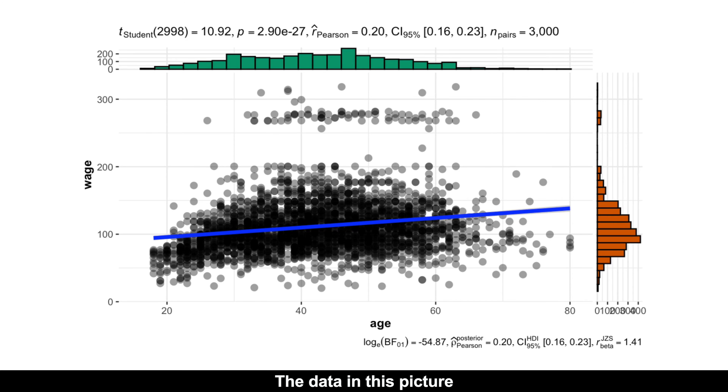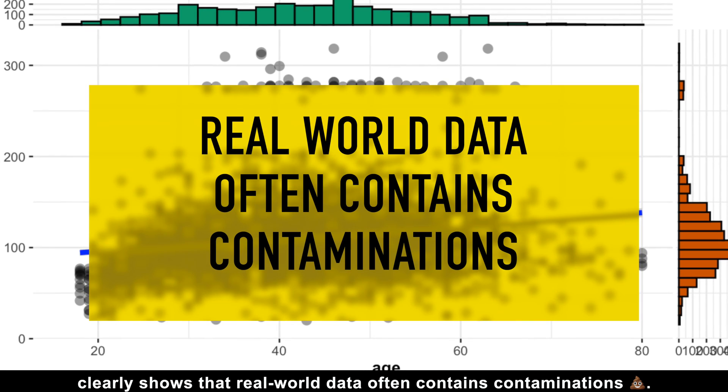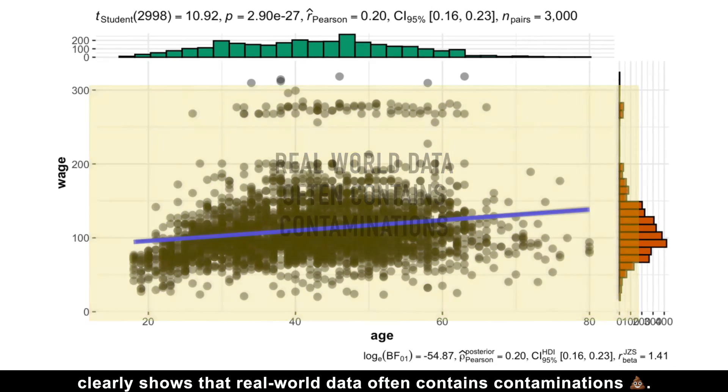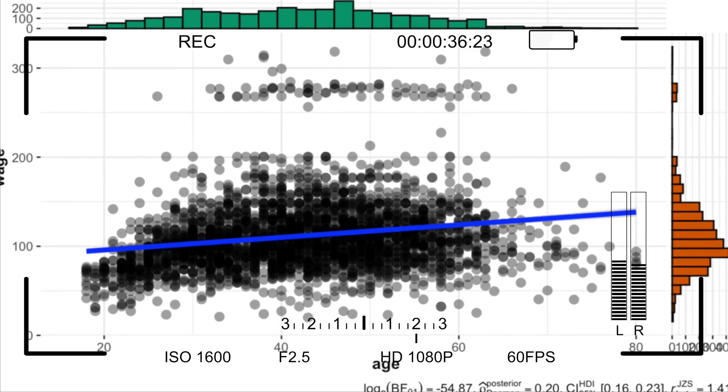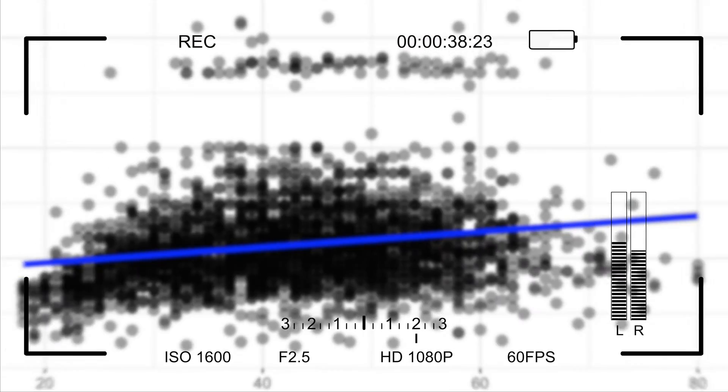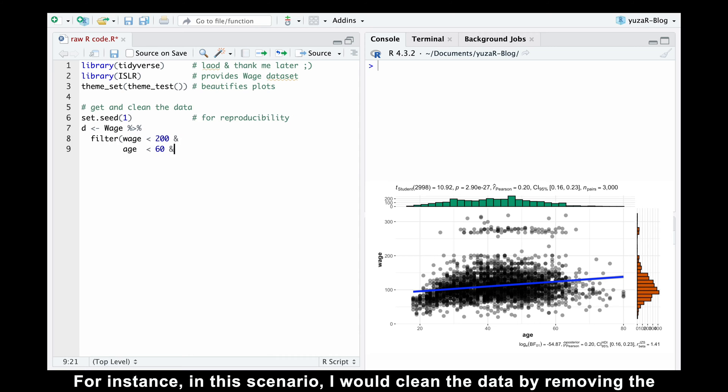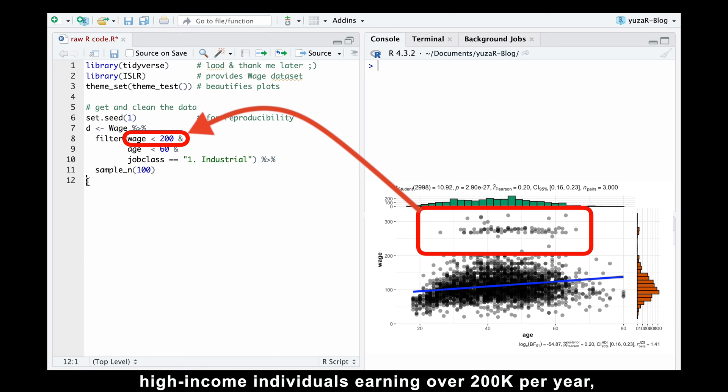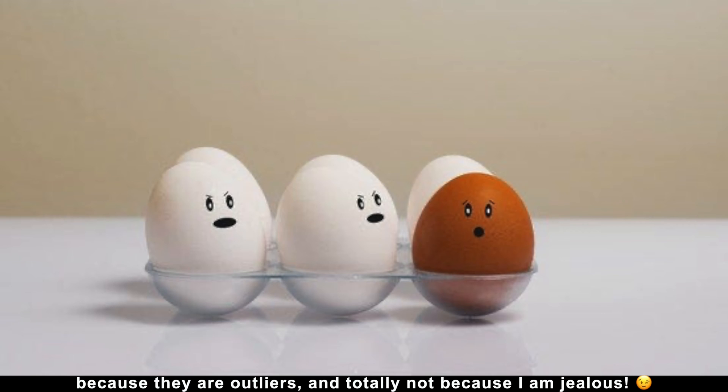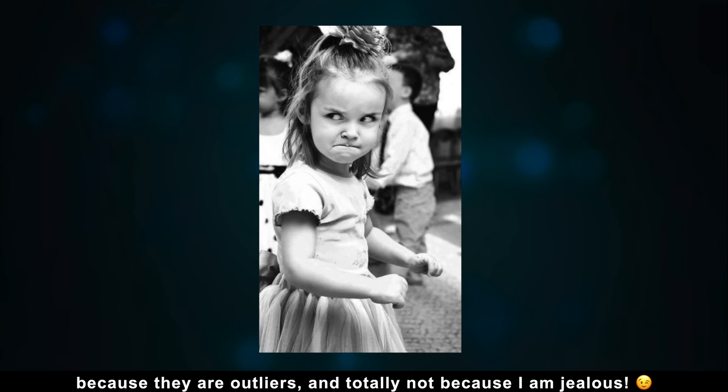The data in this picture clearly shows that real-world data often contains contaminations. Therefore, it's crucial to look at the data before rushing into modeling. For instance, in this scenario, I would clean the data by removing high-income individuals earning over 200k per year, because they are outliers and totally not because I'm jealous.